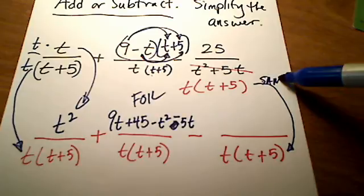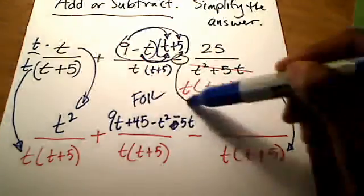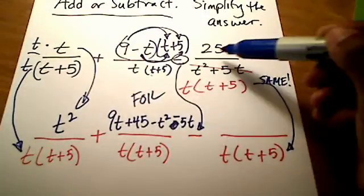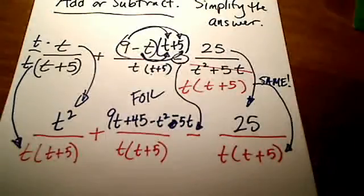Now, keep in mind, this was a minus sign right here. So I've already got the minus sign there. Watch out for that. So I'm just going to bring that 25 right on down. I don't have to do anything to its numerator, because the denominator already had the LCD.